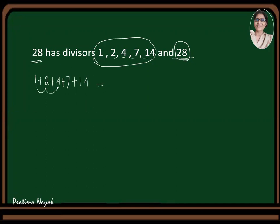Let us see whether it is 28 or not. 2 plus 1, 3 plus 4, 7, 7, 14, 14 plus 14, 28. Yes. So 28 is your perfect number.